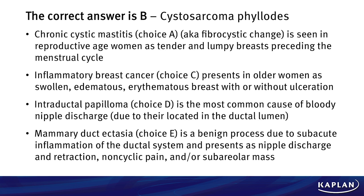Inflammatory breast cancer, choice C, presents in older women as swollen, edematous, and erythematous breasts with or without ulceration. This is a very aggressive cancer with a very poor prognosis and is readily apparent based upon those clinical exam findings. Intraductal papilloma, choice D, is the most common cause of bloody nipple discharge due to its location in the ductal lumen. Any time you see a most common cause of something, remember that for both the wards and the boards — if you have somebody with bloody nipple discharge, be thinking about intraductal papillomas.